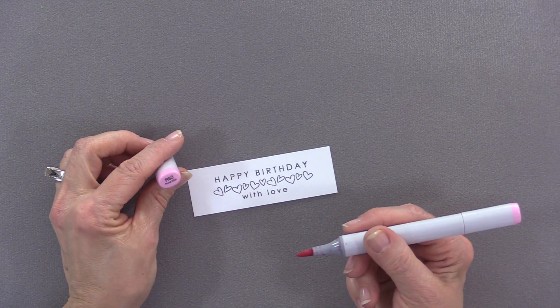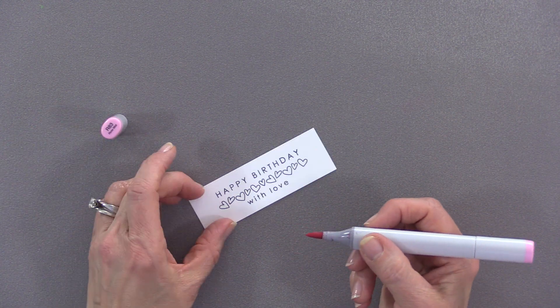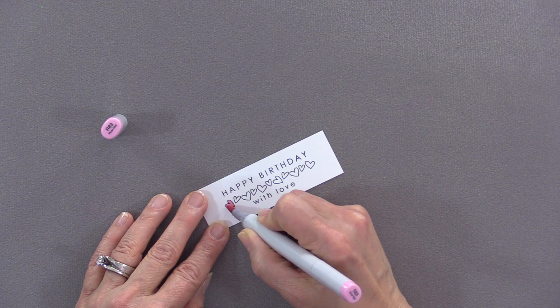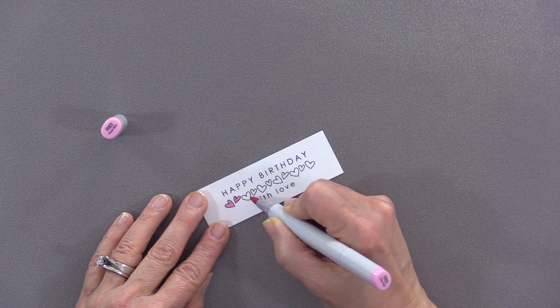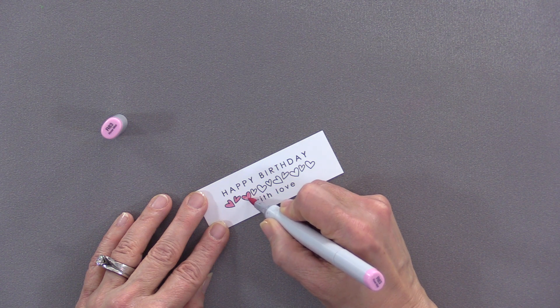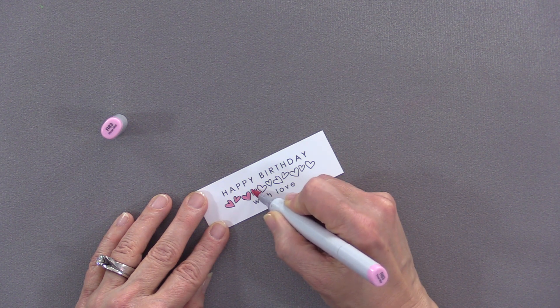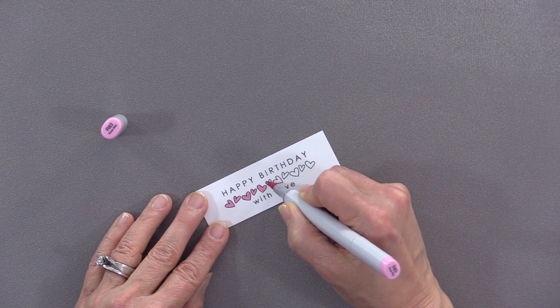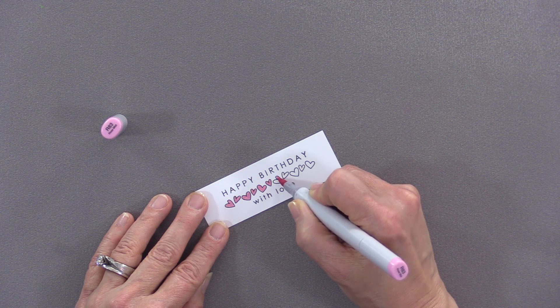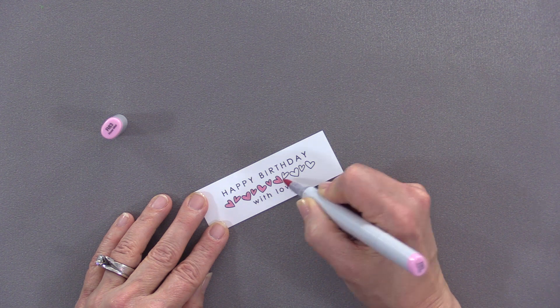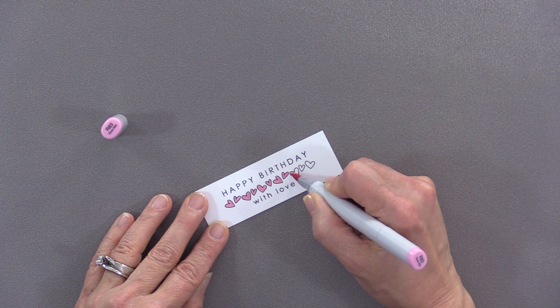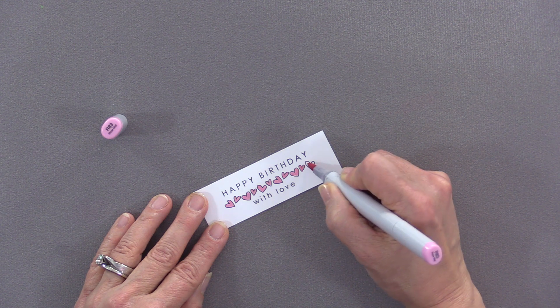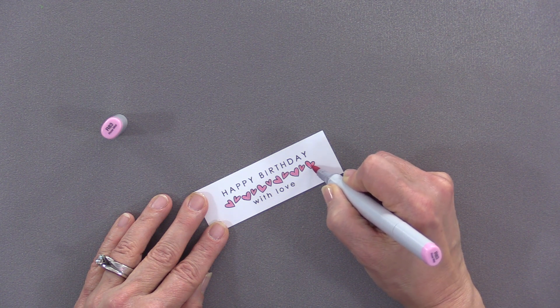The Copic marker that I'm going to use is R83, which is called Rose Mist, and I think this one coordinates really nicely with our Dusty Rose and Passionate Pink mix that we did. I'm not doing any special shading at all, just coloring this in straight. If you don't want to use a Copic marker, you can always use a water-based marker or you can even use a water brush and pick up a little bit of the Dusty Rose ink and watercolor using the matching ink into these hearts. I just want those hearts to be a very similar color but not overtake the card.